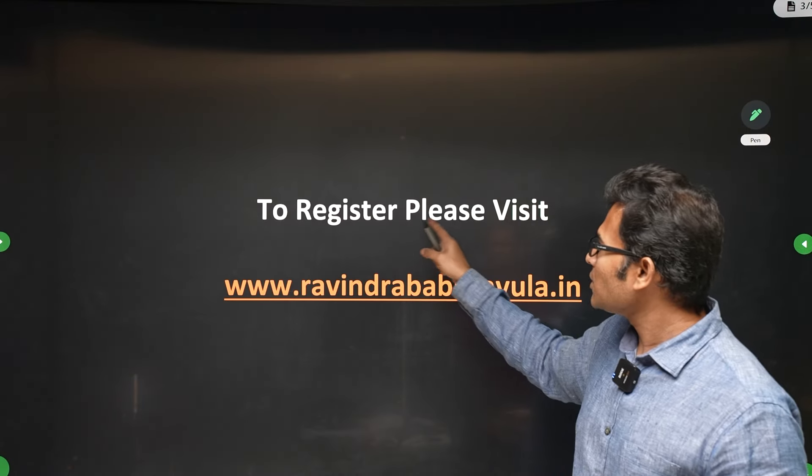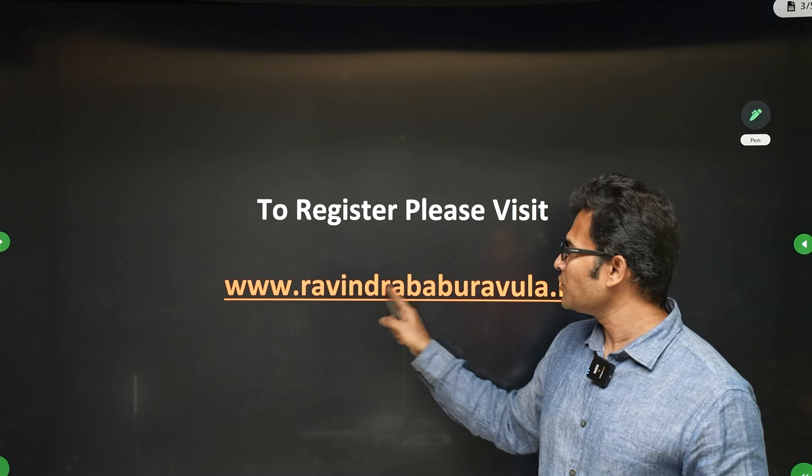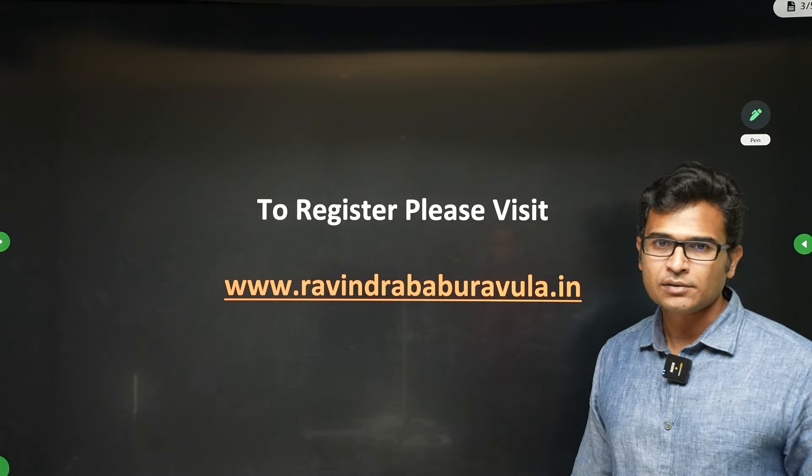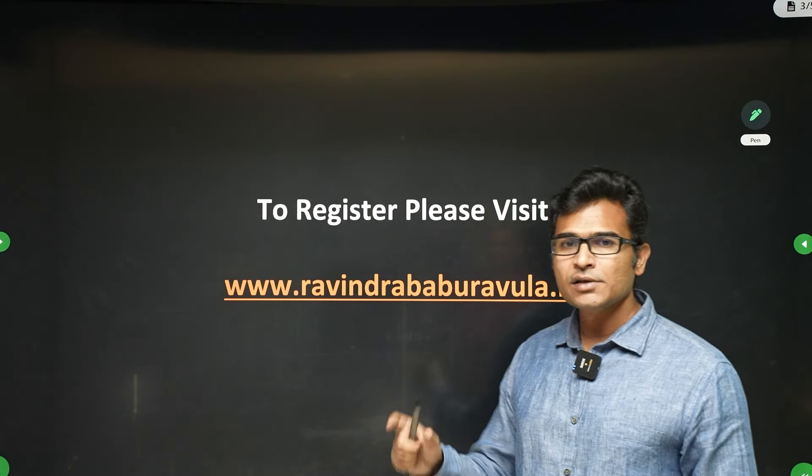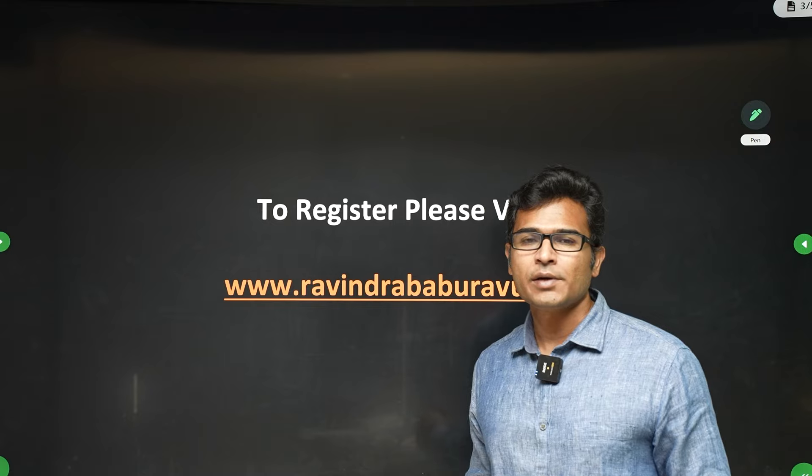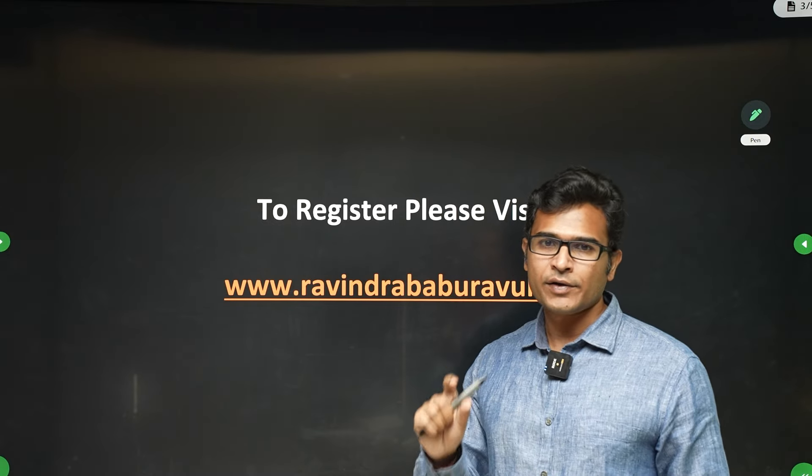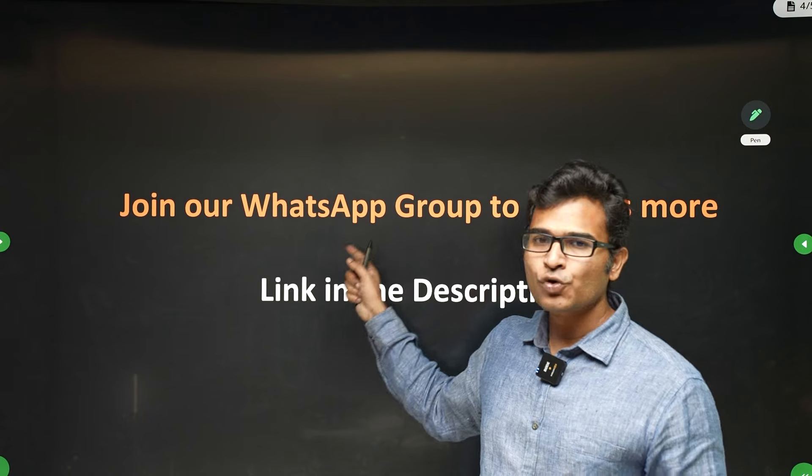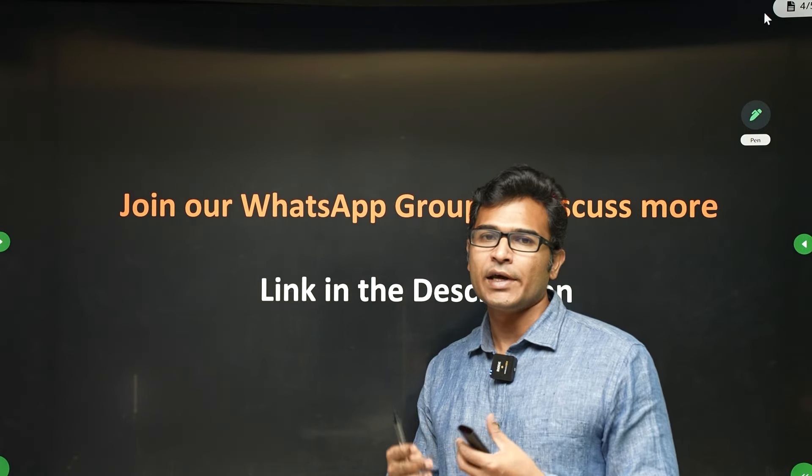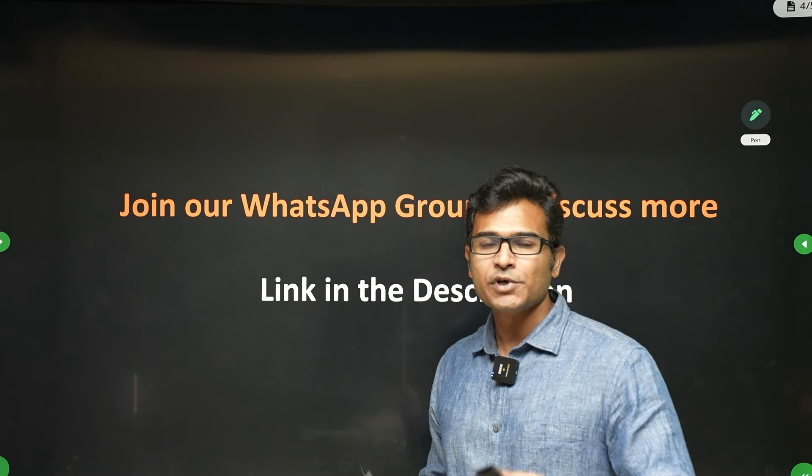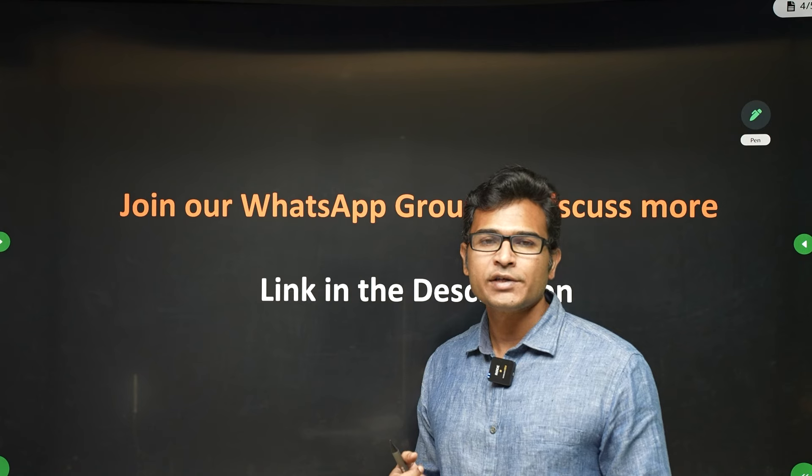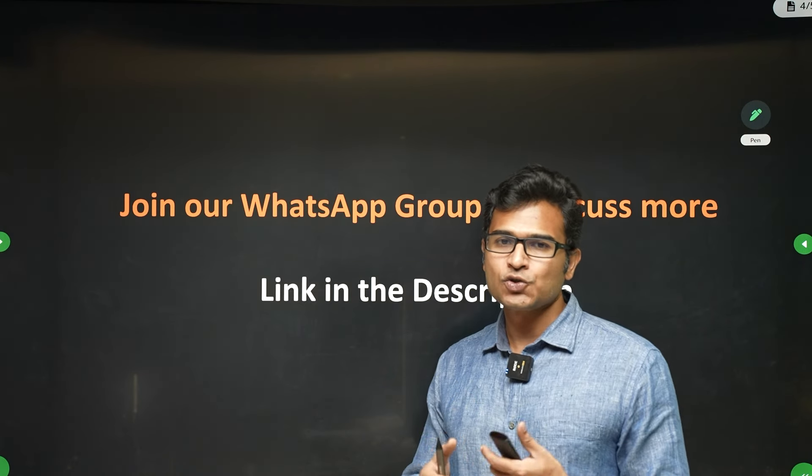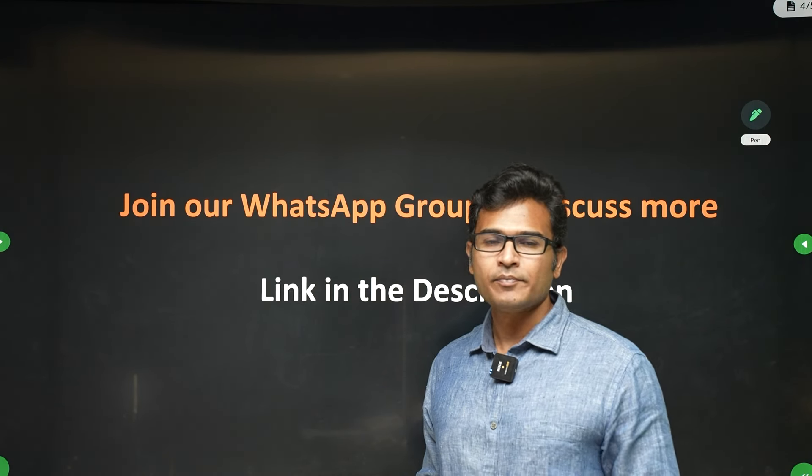If you want to register for our course, you can visit ravindrababuravula.in. On the website, there is a WhatsApp number. You can WhatsApp us if you have any queries and then join our WhatsApp groups to chat with students like you. The link is in the description. You can write any queries in the WhatsApp group or chat with other students who are preparing for GATE.